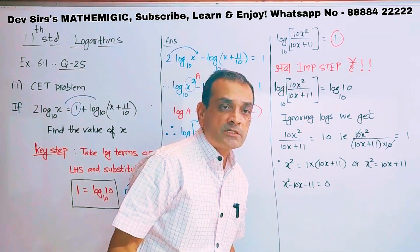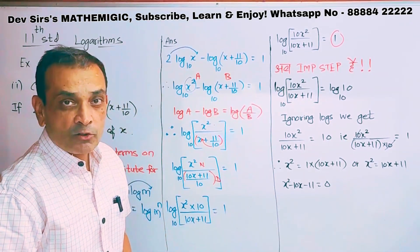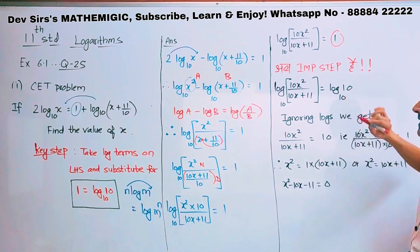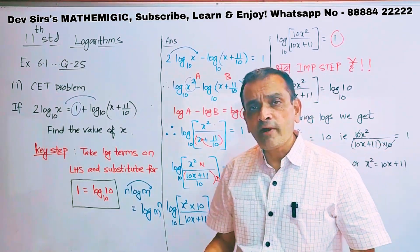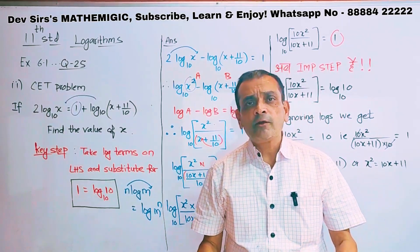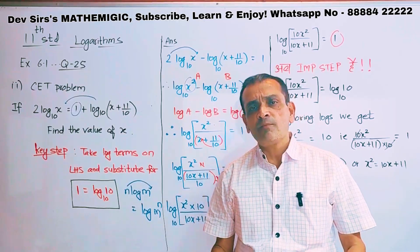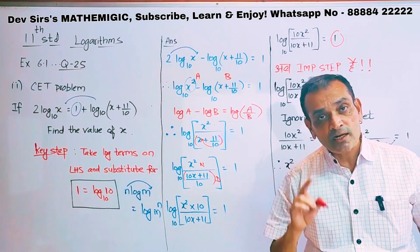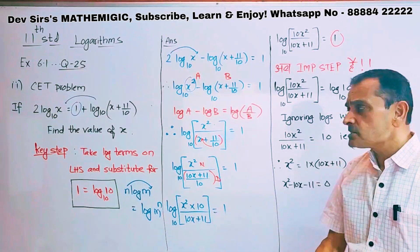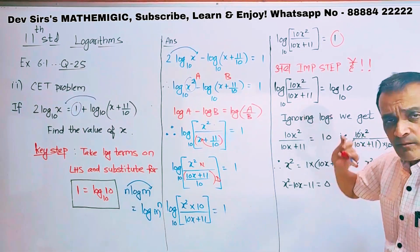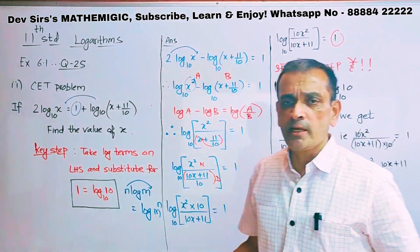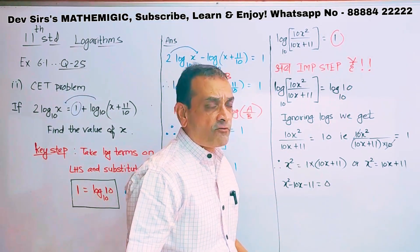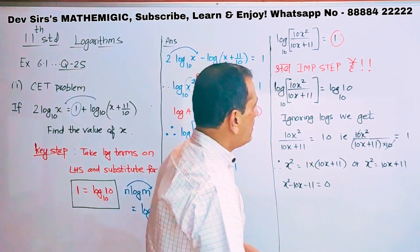Now comes the important step. So what is the key step that I have told you? On the right hand side, one I am going to call as log of 10 to the base 10. I can also call it as log of 20 to the base 20, log of 30 to the base 30, because log of any number to the same base is 1. That is why I have chosen log of 10 to the base 10. What is the reason? Simple - because on the left hand side I have got base 10, so on the right hand side it is better to take base 10.